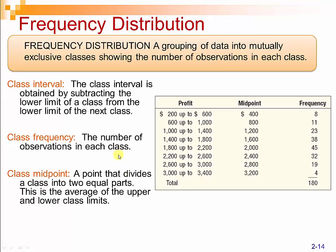Another way we can represent data is using a frequency distribution, where we create classes of values and group our data into each of these classes. When we use a frequency distribution, we do lose some level of granularity — we know that eight observations fell between $200 and $600, but we don't know exactly where they fell. Were they all at $201, all at $599, or spread out evenly? We don't know that. But when we have a large number of observations, a frequency distribution can do a good job of providing some level of granularity while still giving us a useful display of our data.